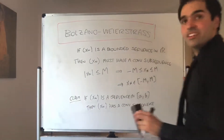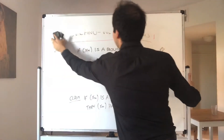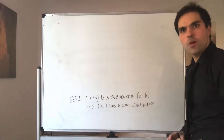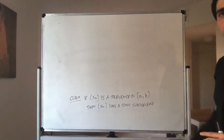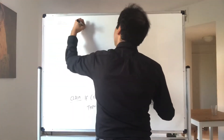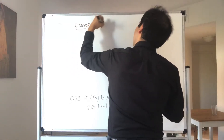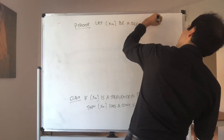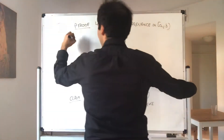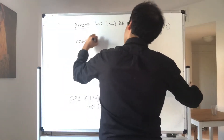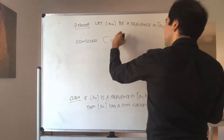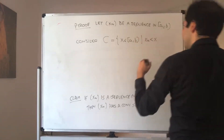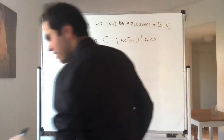Now how do we show this? There's a nice proof I found in the Pugues analysis book. This is sometimes called sequentially compact — the closed interval [a, b] is sequentially compact. Proof: let Xn be a sequence in [a, b], and consider the following set C, which is the set of points x in [a, b] such that Xn is less than x only finitely often.